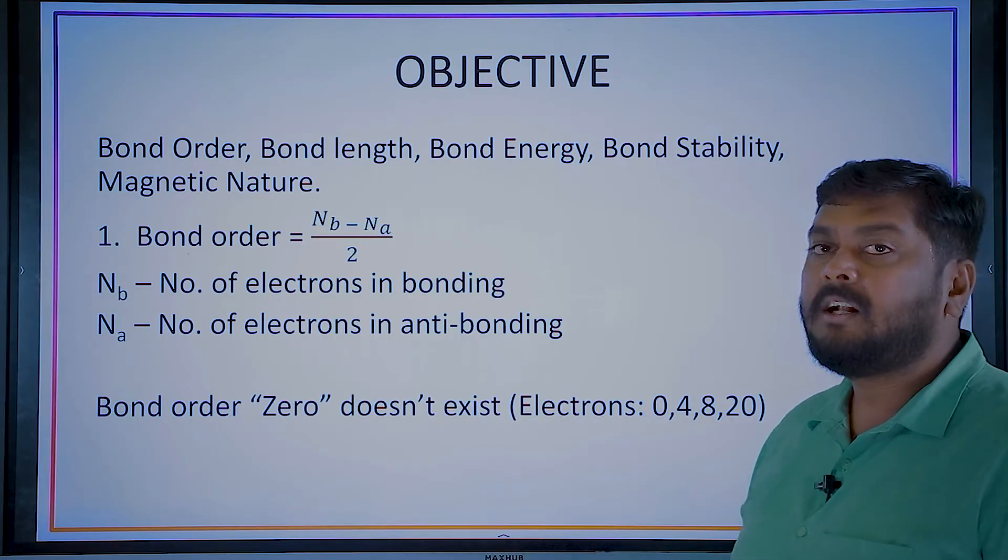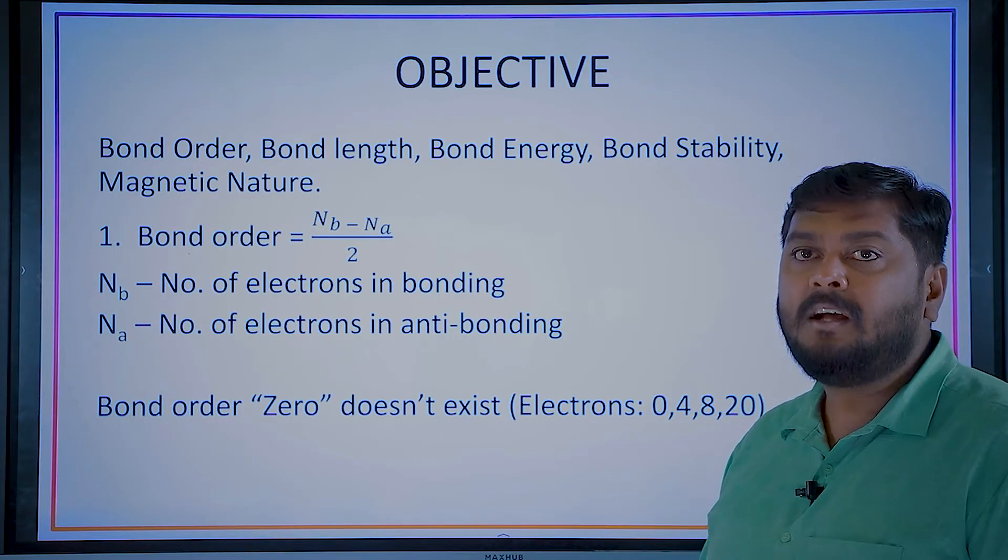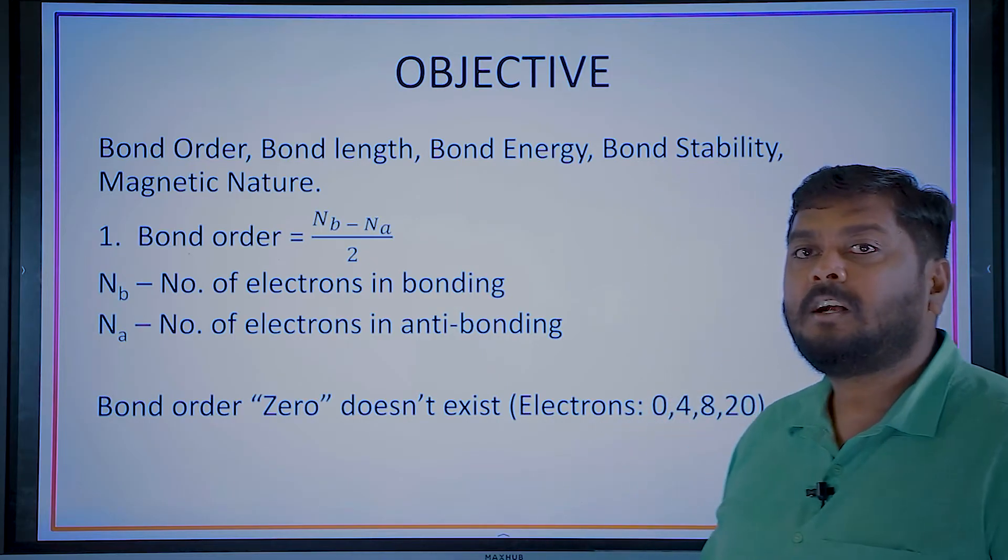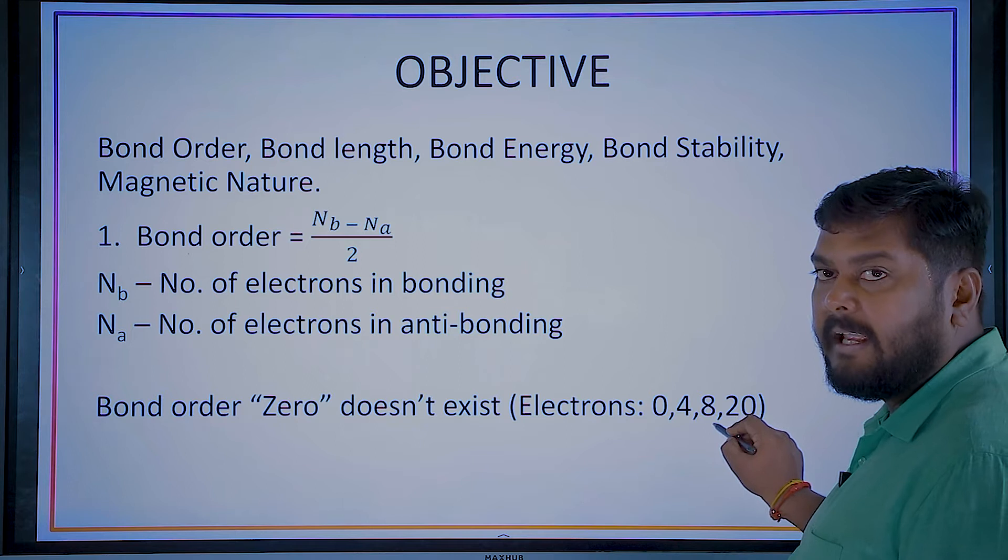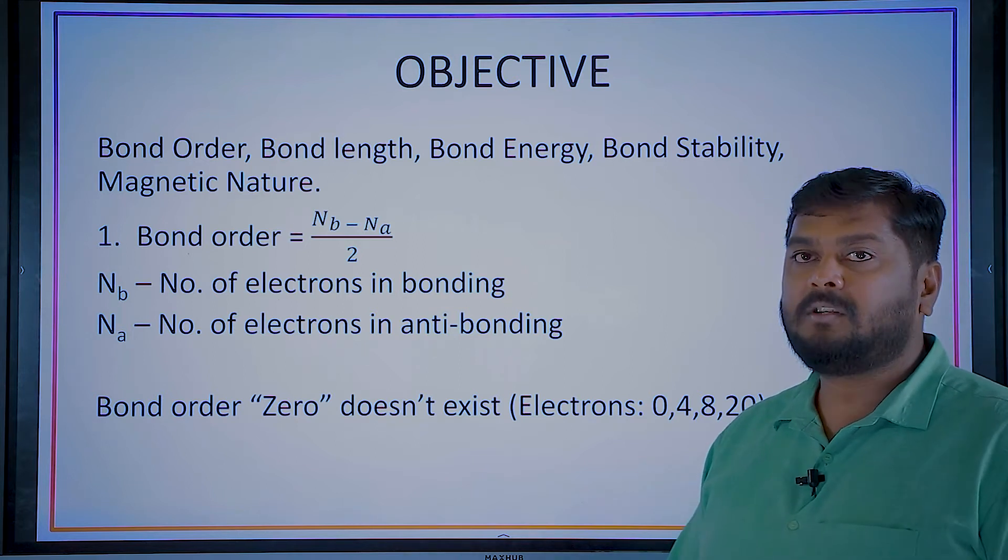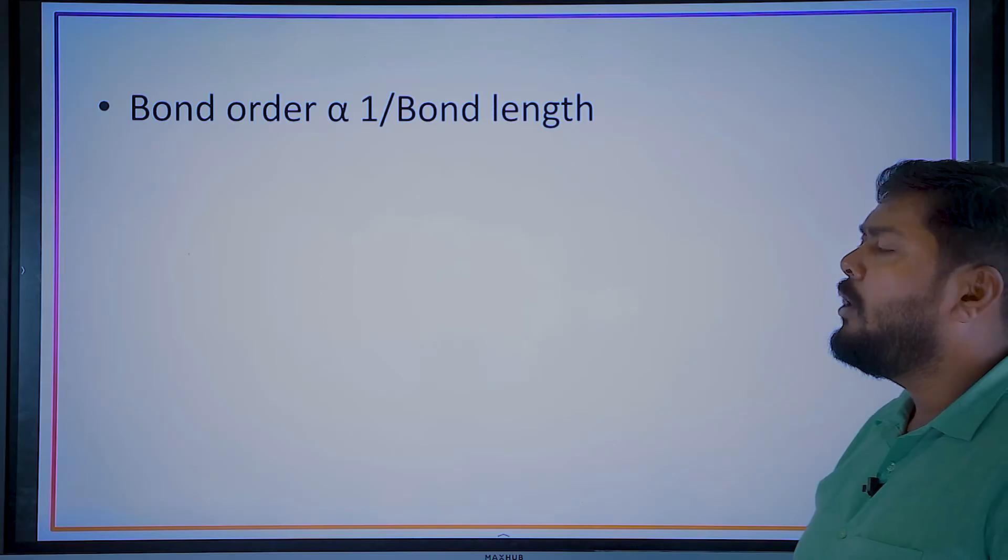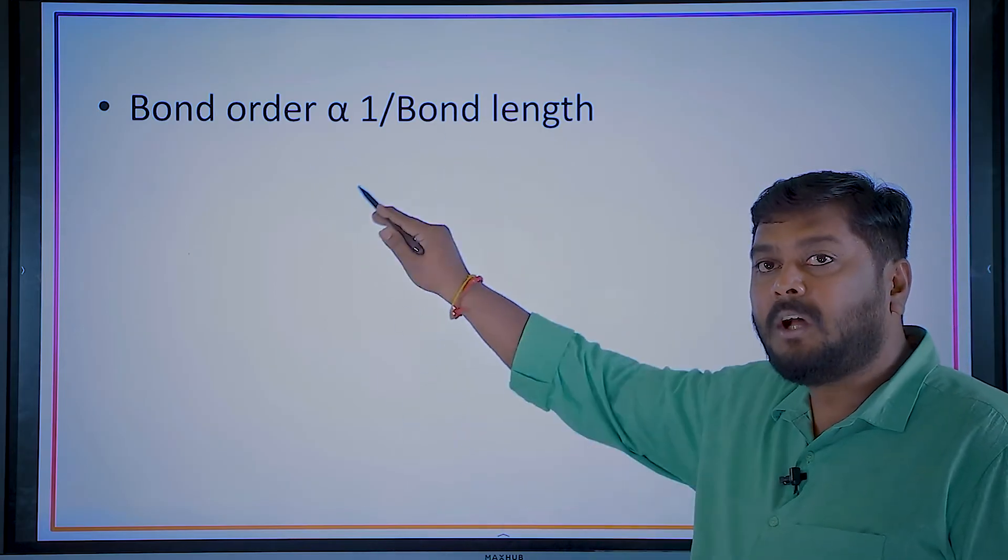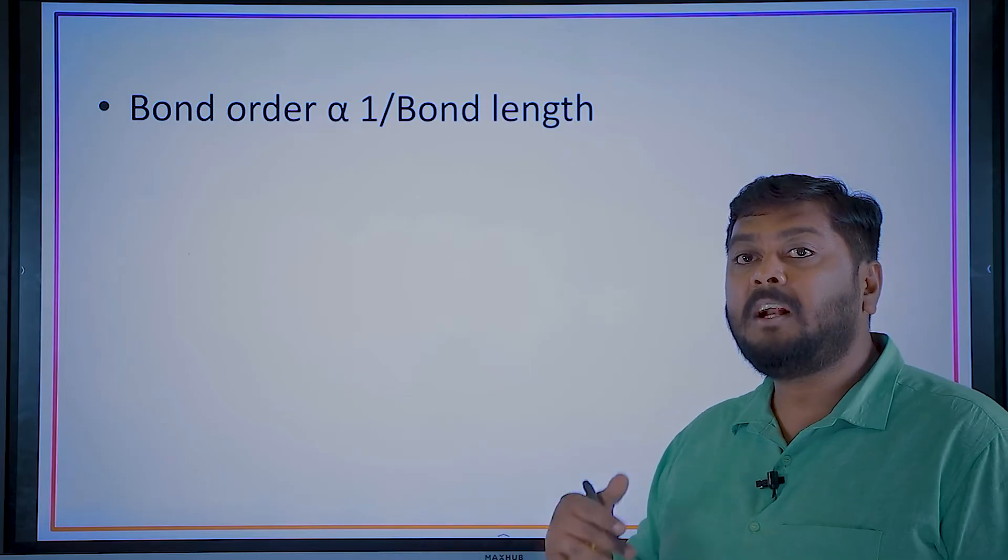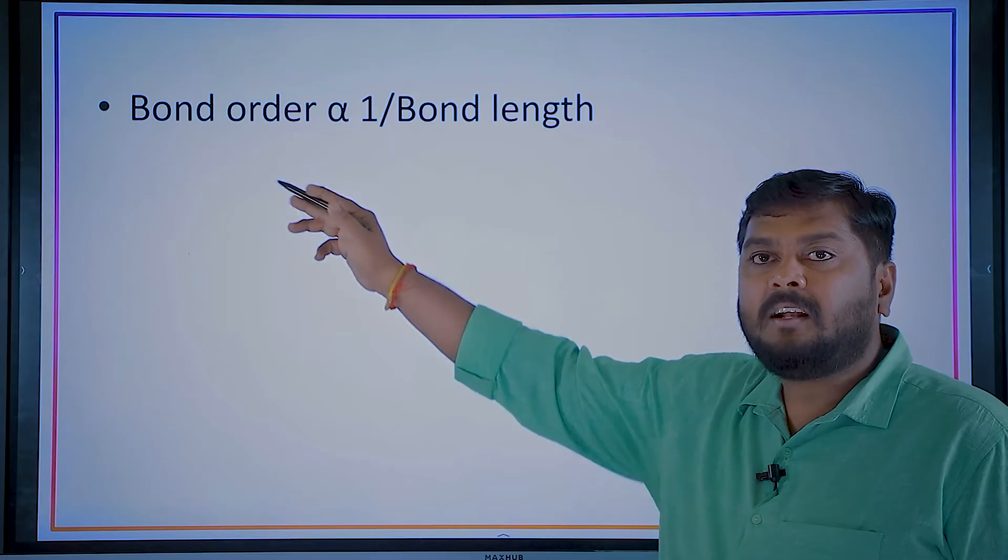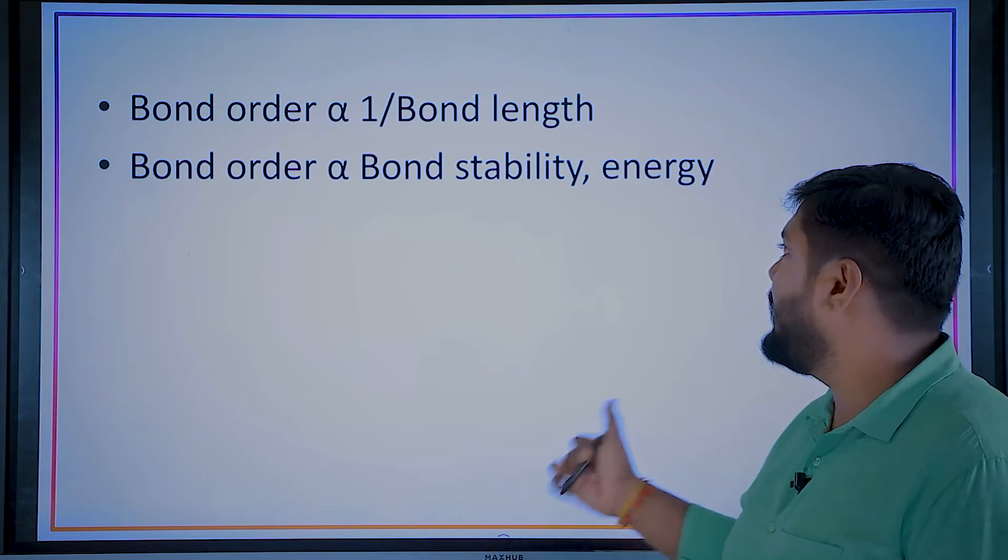So when bond order is 0, the bond doesn't exist. What is the relation between bond order and bond length? They are inversely proportional. So which of the following arrange molecules in increasing order of their bond length? Bond order will be directly proportional to the bond strength and as well as bond energy.